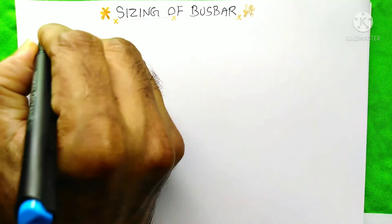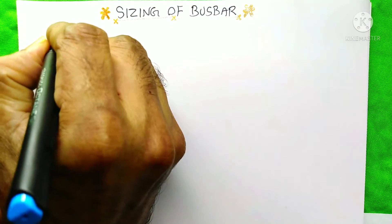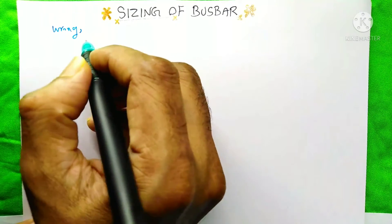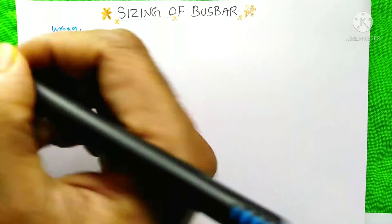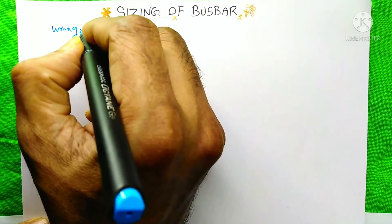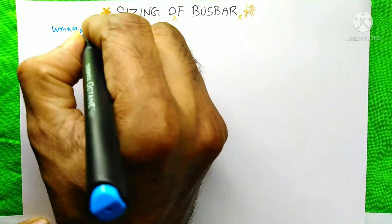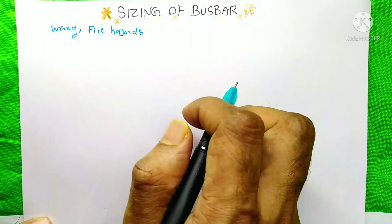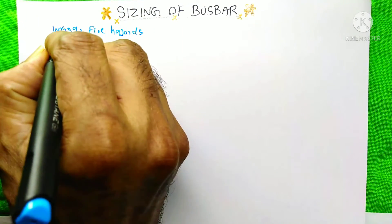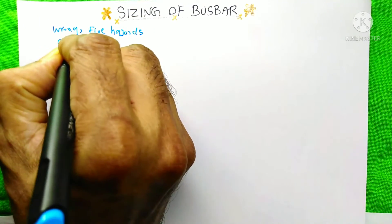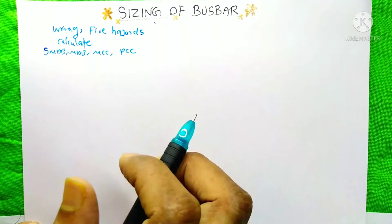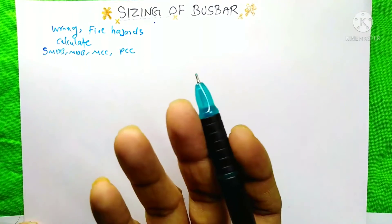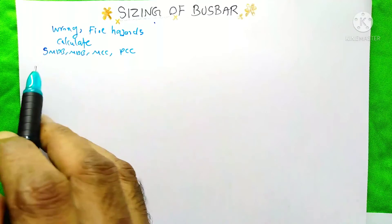Because of the wrong calculation of the bus bar, the industry or the premise itself faces a lot of problems — sometimes it causes fire hazards. To avoid this, we have to calculate the bus bar in the correct way. In our industry we may have different types of panels.